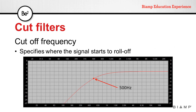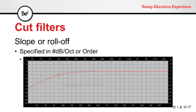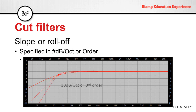The cutoff frequency specifies where the signal starts to roll off. The slope, or roll-off, determines the progressive attenuation of the signal below or above the cutoff frequency, and it's specified in dB per octave or order. Each order represents a 6 dB per octave change in the slope. So a 6 dB per octave filter is equivalent to a first order filter, a second order filter is equivalent to 12 dB per octave, and a third order is equivalent to 18 dB per octave.